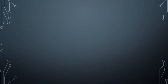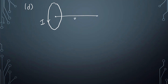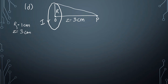Let's start the solution. We have this circular loop with a current flowing in it and we have to find the magnetic field at a point P at a distance of 3 centimeters from the center. The radius R is given as 1 centimeter and the axial distance Z is equal to 3 centimeters. The distance from the element to point P can be found using the square root of R squared plus Z squared.